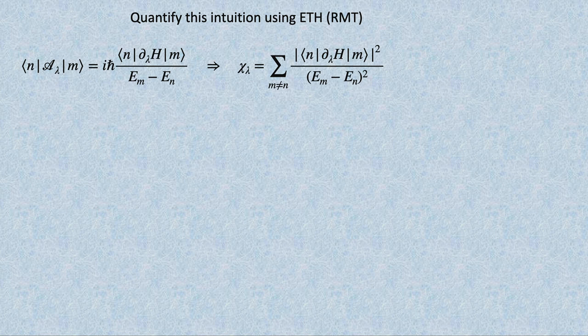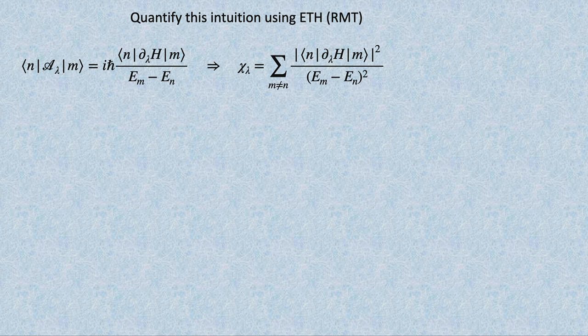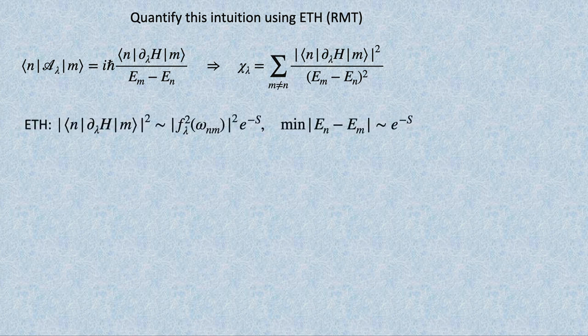Now I will compare integrable systems and systems which satisfy ETH—ergodic, strongly chaotic systems, sometimes called strongly mixing. Going back to the representation of fidelity susceptibility: for now I assume I have one parameter, so let's just look at fidelity susceptibility. What we discussed yesterday: for ETH or random matrix theory, matrix elements—now I need the square of matrix elements—have this function f-squared of omega, which corresponds to the non-equal-time response, the Fourier transform of the correlation function.